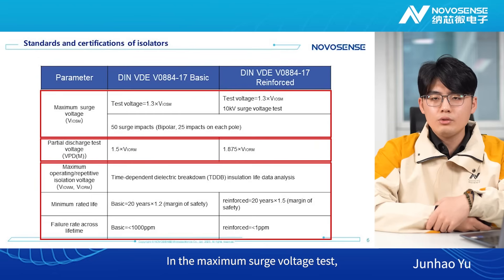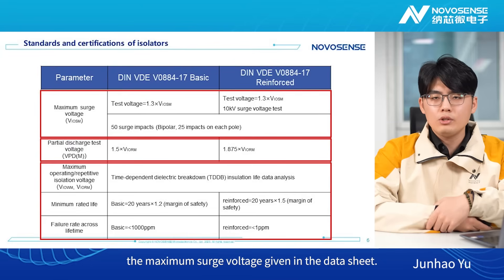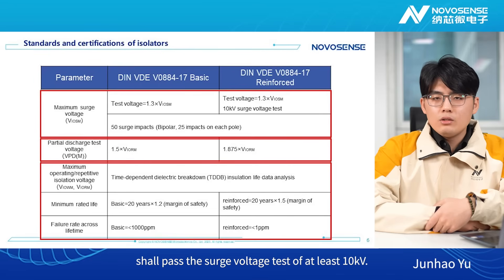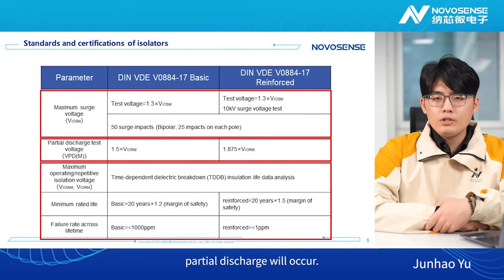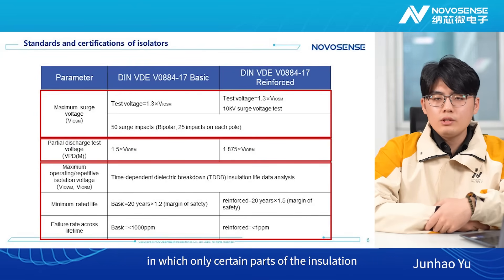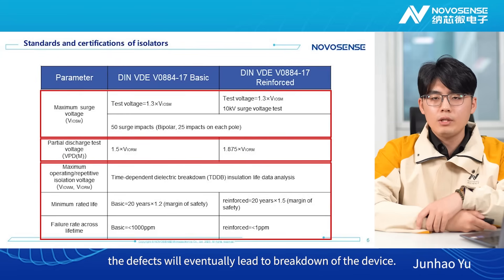In the maximum surge voltage test, both basic and reinforced isolation grades are required to pass 50 bipolar surge impacts, and the final measured voltage shall not exceed 1.3 times the maximum surge voltage given in the data sheet. The reinforced isolation shall pass the surge voltage test of at least 10 kV. When there are defects inside a device, partial discharge will occur. Partial discharge refers to the electrical discharge phenomenon in which only certain parts of the isolation between conductors experience breakdown. Short-duration partial discharge does not affect the insulation strength, but under repeated action of high voltage, the defects will eventually lead to breakdown of the device.